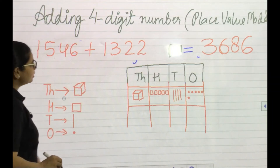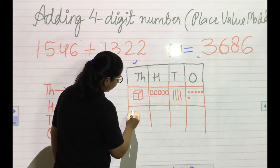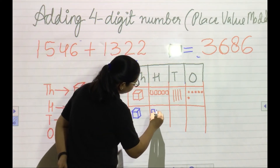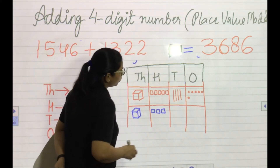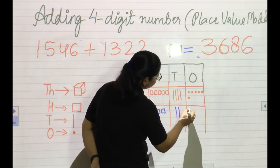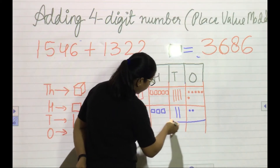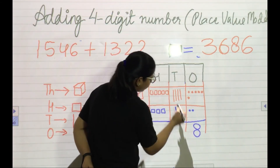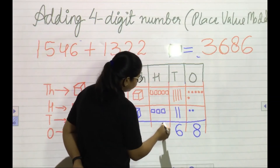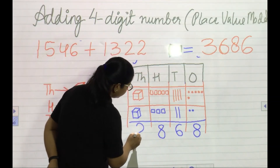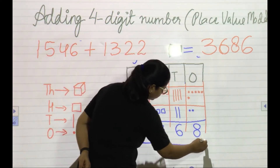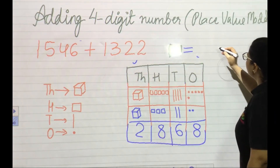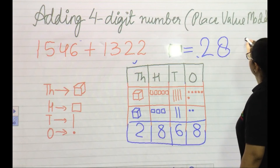Now the next number is 1322. Again, one cube for 1000. Then 300 — three squares. Then 20 — two tens — and two ones. Now let's add them up: six plus two is eight dots, six bars, five plus three is eight squares, and two cubes. So our answer is 2868. The sum is 2868. Did you get the same answer?